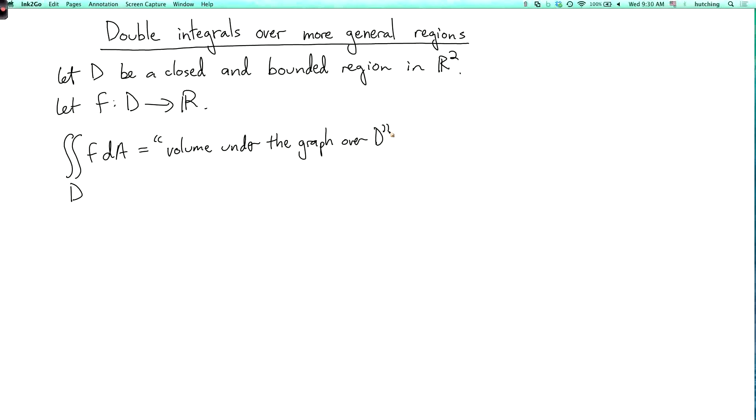This is only literally going to be true when F is positive, otherwise you'll have some volumes with signs. So the picture is, here are the axes. Here's the region D on which our function is defined.